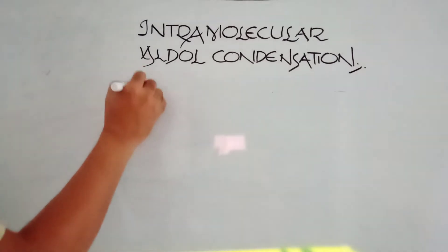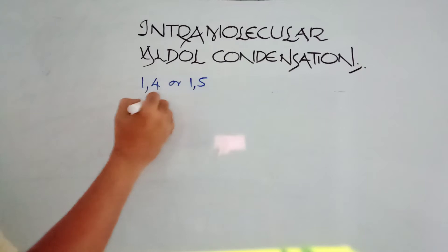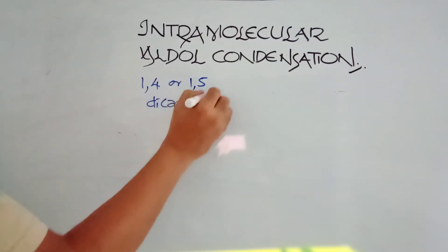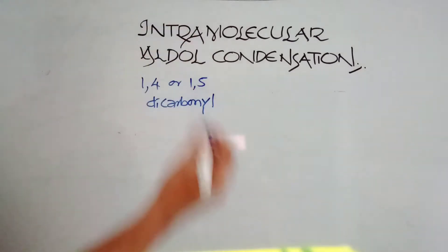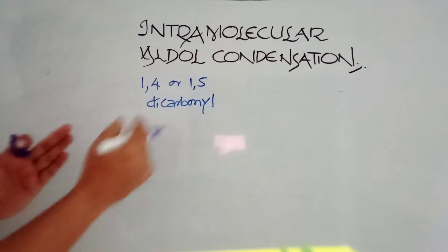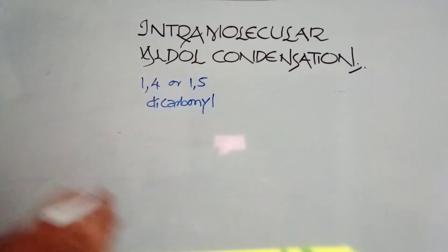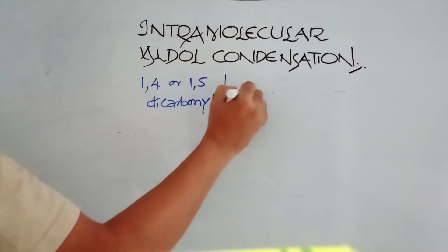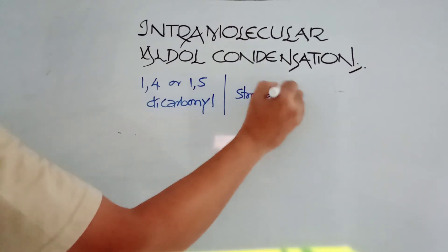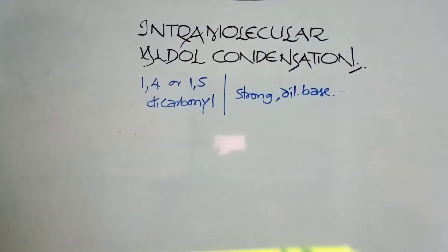If you have 1,4 or 1,5 dicarbonyl compounds, you can take ketones or aldehydes. They will turn into a five-member ring or a six-member ring. You need a strong dilute base as we perform in the aldol condensation case. Same thing. I will give you one example.